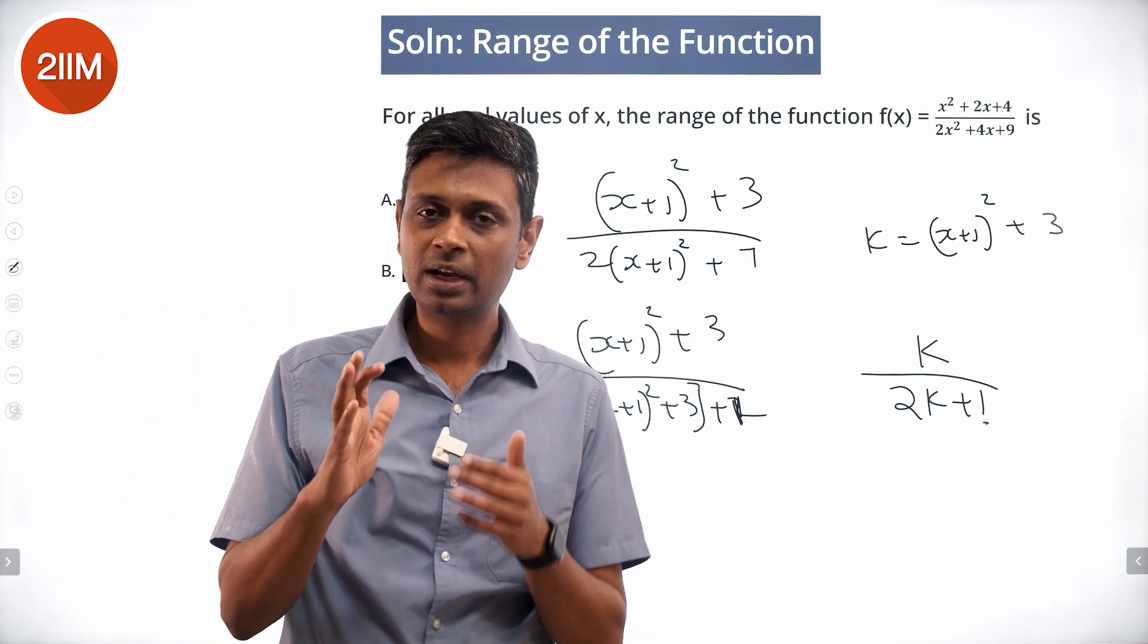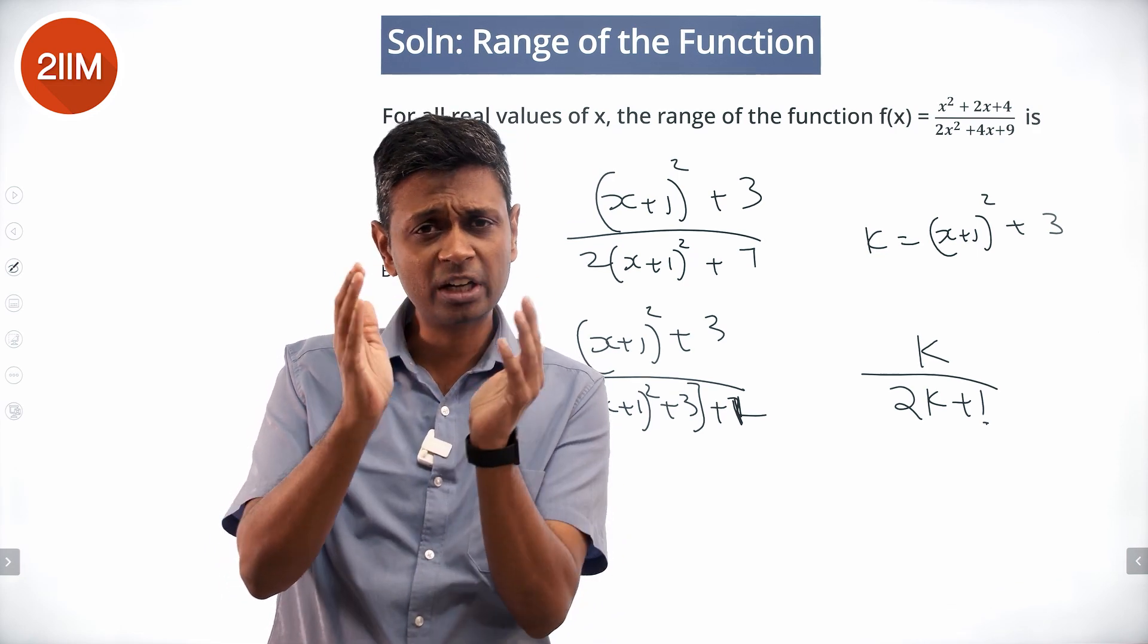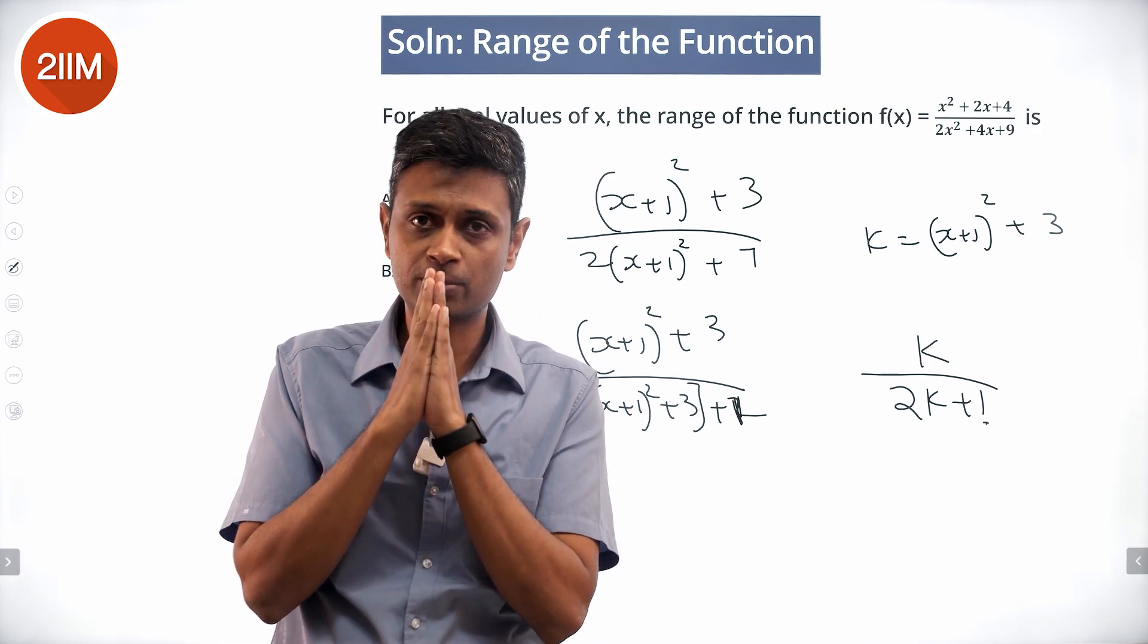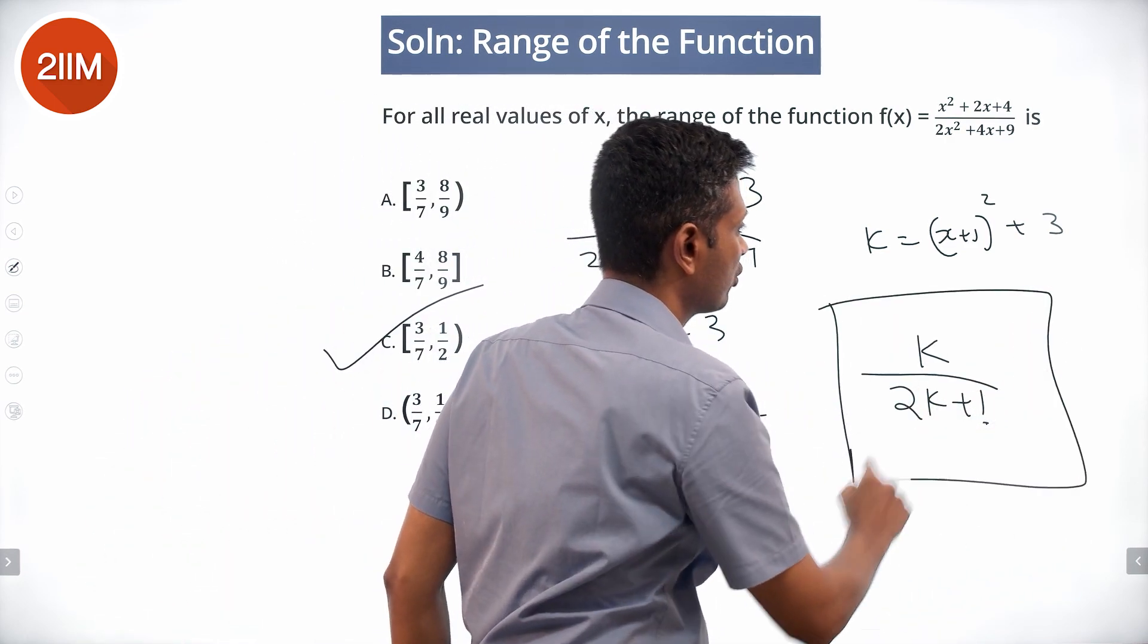Complete the square. Create the expression after completing the square. Replicate the numerator expression in the denominator as much as possible. Then attack this question. So this becomes k by 2k plus 1 where k is this equation.